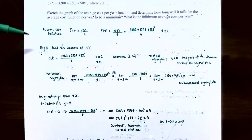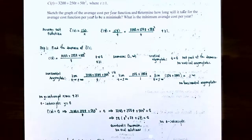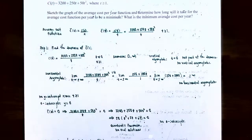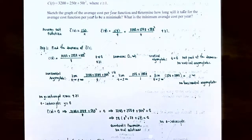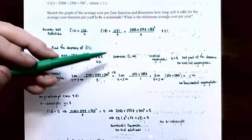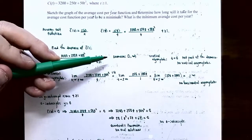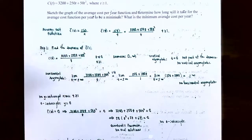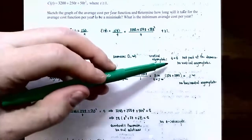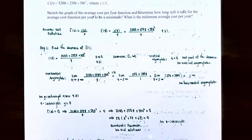Step 1 in the curve sketching guidelines is to find the domain of the function. Notice that the average cost function C̄(t) is undefined whenever the denominator is 0, so t cannot be 0. But the domain was given to us in the problem — we're only interested in t values greater than or equal to 1. So the domain is [1, ∞). There is a vertical asymptote at t = 0, but since t = 0 is not part of the domain, there are no vertical asymptotes to concern ourselves with.